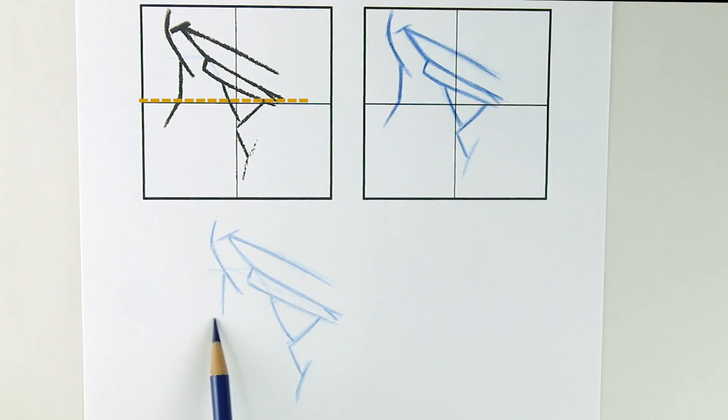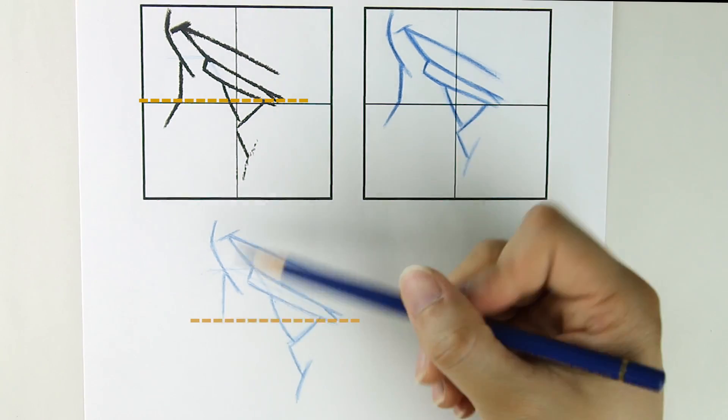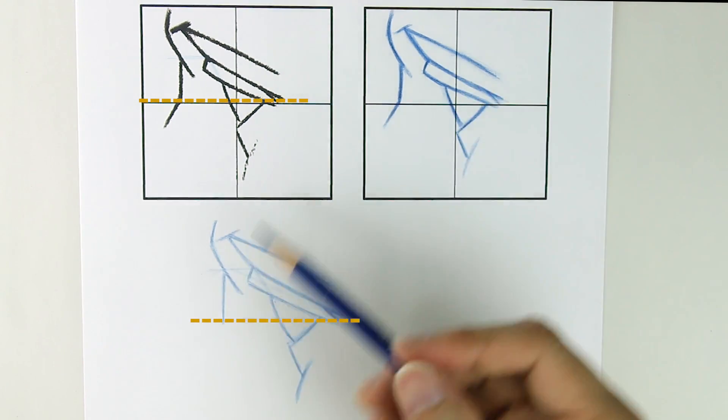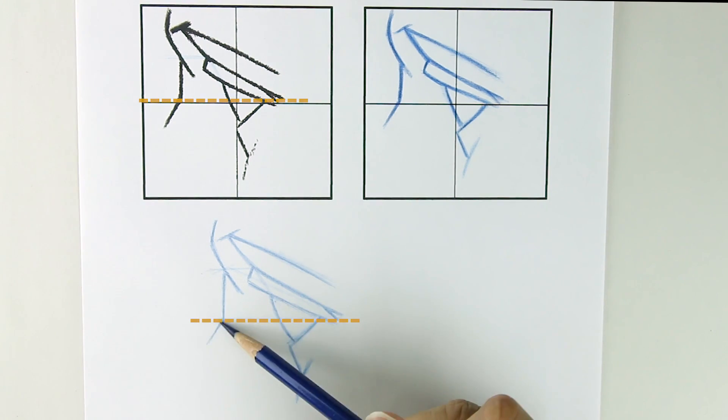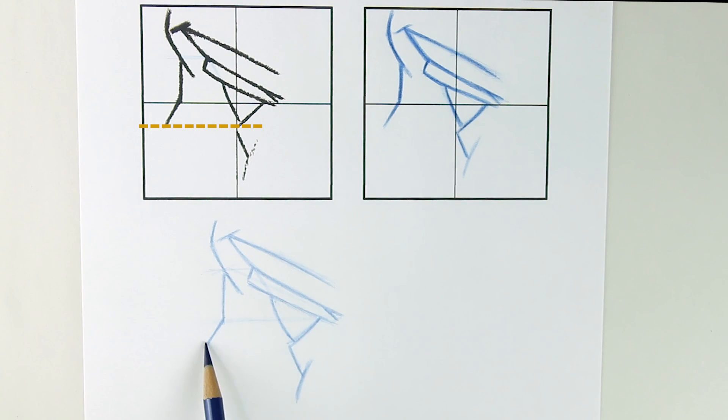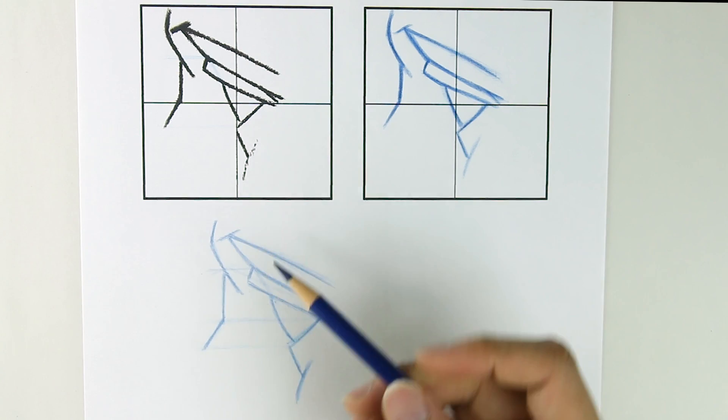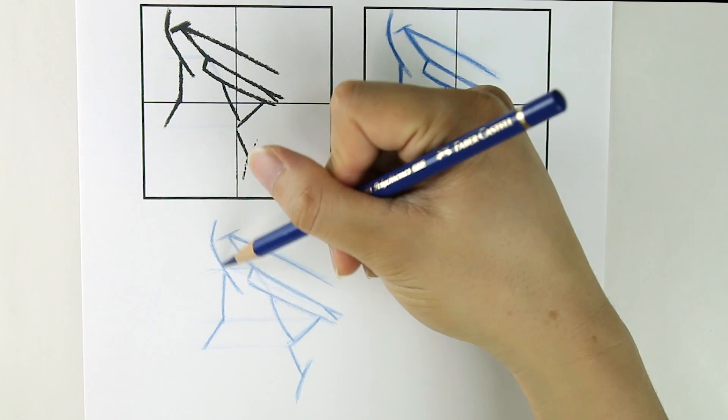Again, we can notice that that point where the nose bridge turns lines up horizontally with the back corner of the eye. Another very useful observation. And lastly, we can notice that the end of this line matches up with this corner of the eyelid. These are the kind of things you want to notice as often as possible when doing observational drawing.